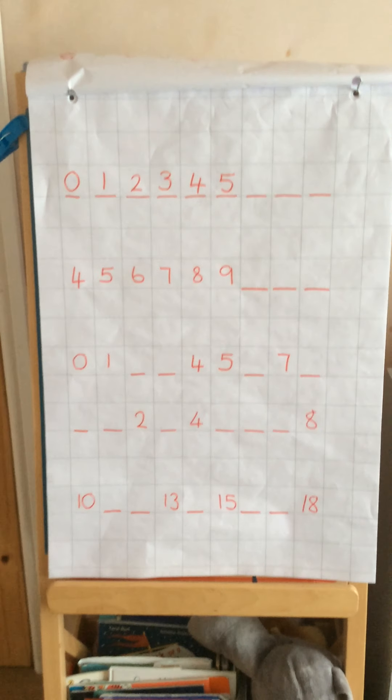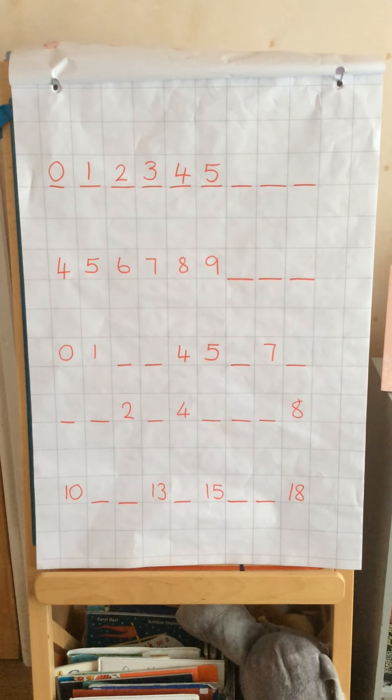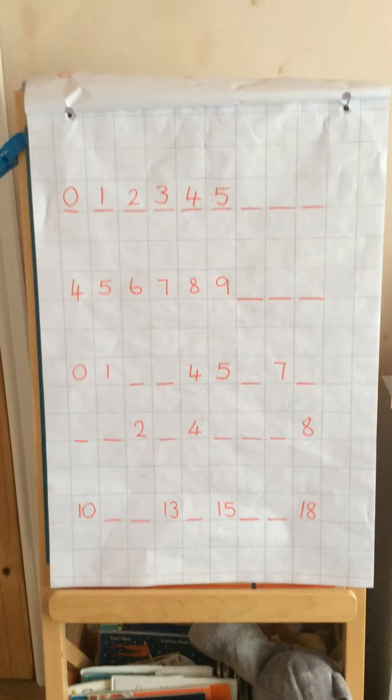Today we're going to be doing patterns that go forward. On Thursday we're going to do patterns that are going backwards, so you'll be subtracting on Thursday - just giving you a little hint of what's coming. Then on Friday we're going to do patterns that go up in twos. Lots to get you thinking! But today these are just going up in one - going up the number line, adding one each time. Find out what the missing numbers are. I'll attach the number line.